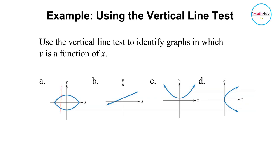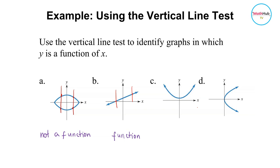For letter A, if I draw a vertical line, it touches the graph at two points. If you can find even one instance where a vertical line touches the graph at two points, then that graph is not a function. For letter B, drawing a vertical line on the graph would touch it at exactly one point — therefore, this is a graph of a function. For letter C, this is also a graph of a function because any vertical line would only touch the curve at exactly one point. For letter D, this is not a function because drawing a vertical line touches the curve at two points.